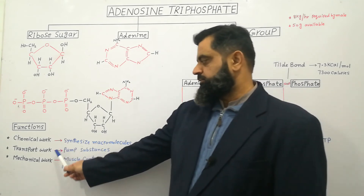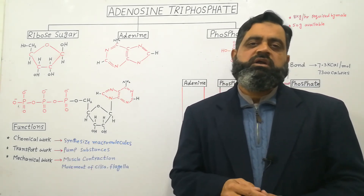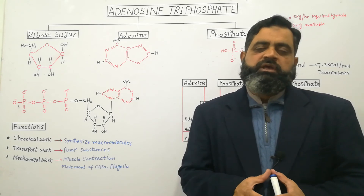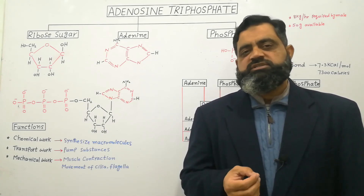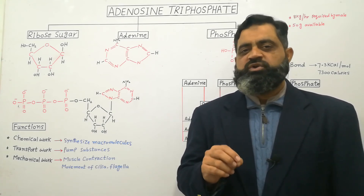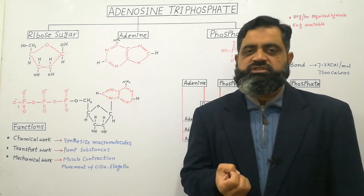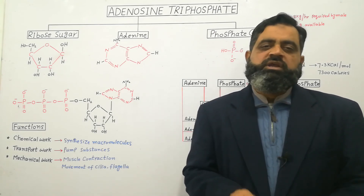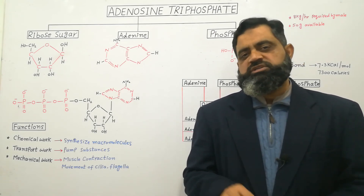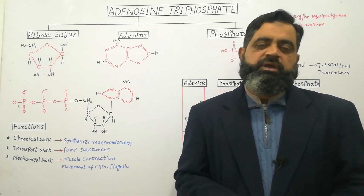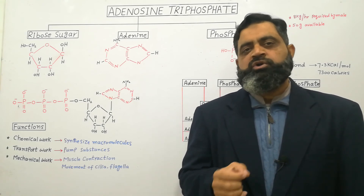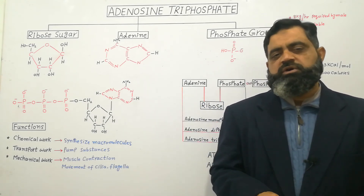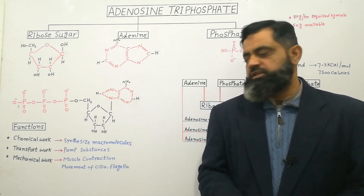The second function is transport work. Our body cells have a plasma membrane which carries out the process of transport. There are two types of transport: passive transport, which does not require energy, and active transport, which requires energy in the form of ATP to move substances in and out of the cell. Our neurons also have sodium-potassium pumps which regulate ion balance across the plasma membrane to regulate the nerve impulse, and this energy also comes from ATP. So wherever organic molecules or ions are transported across the plasma membrane, ATP provides the energy.